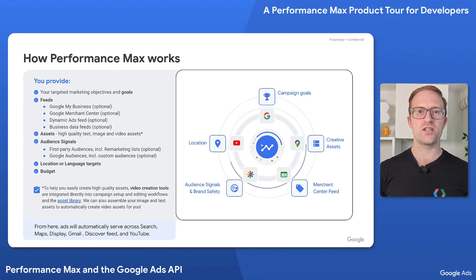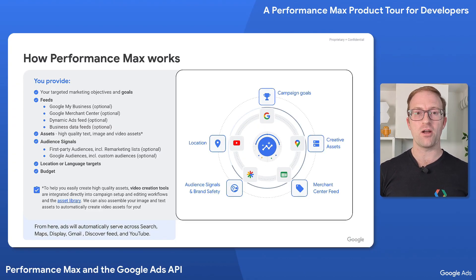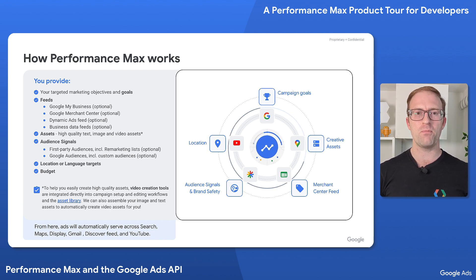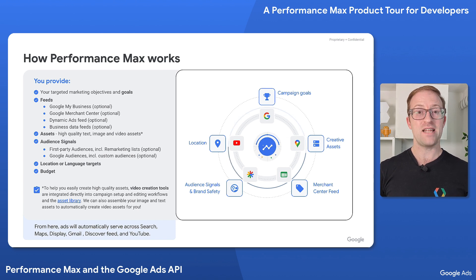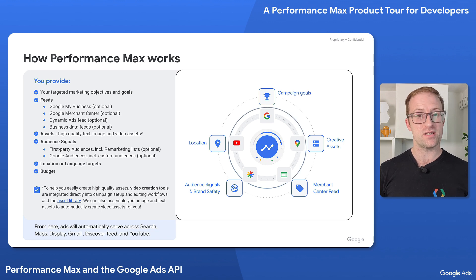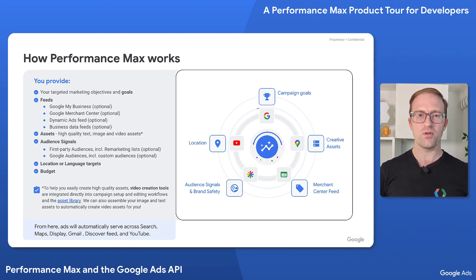PMAX is different from traditional campaign types in that it uses Google AI to automatically optimize your campaigns for conversions. This means that you don't have to spend time manually managing your bids, keywords, or ad creatives. Instead, you can focus on creating high quality assets and goals that are relevant to your business. PMAX will then use this information to create and deliver personalized ads to your target audience.